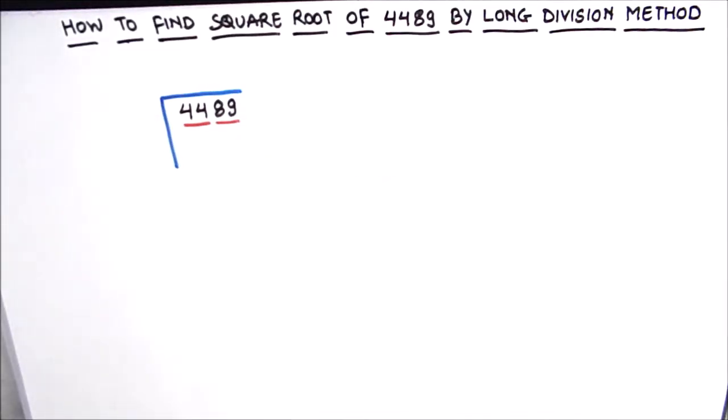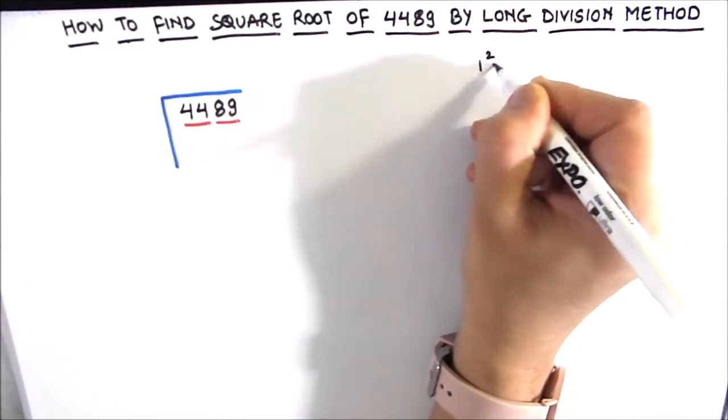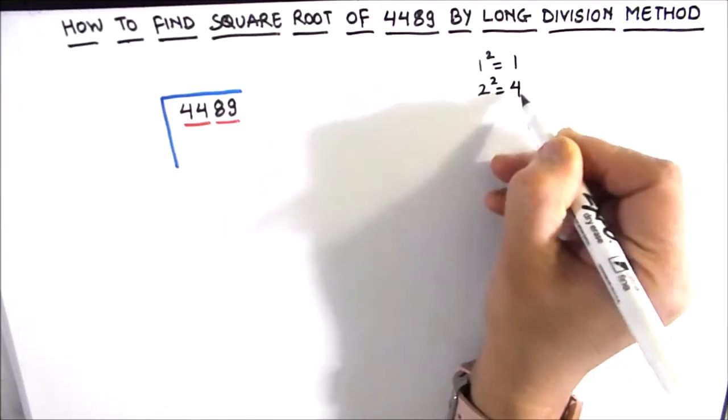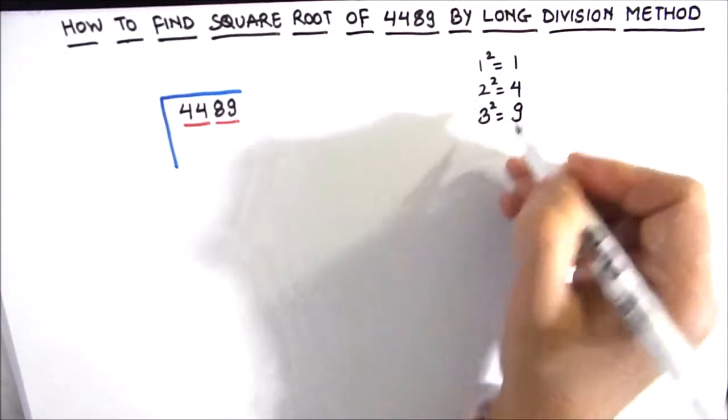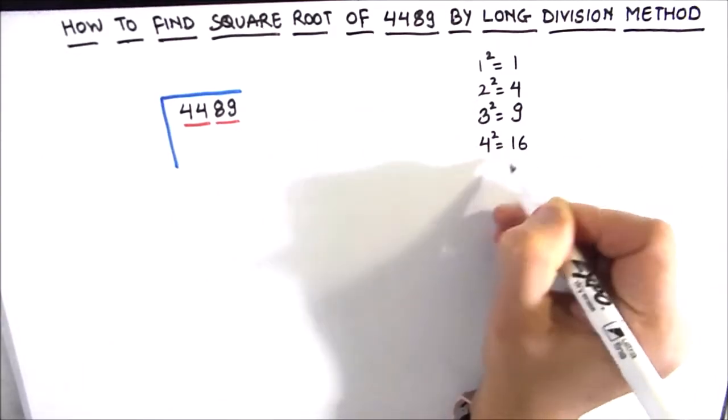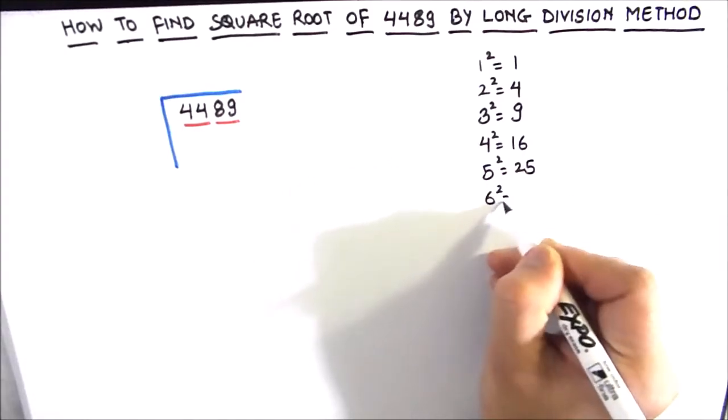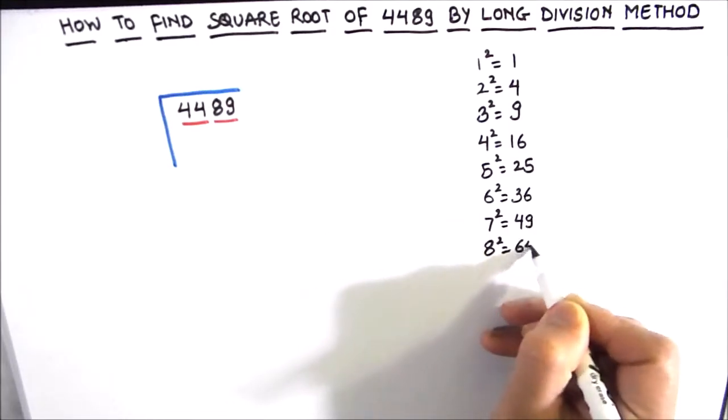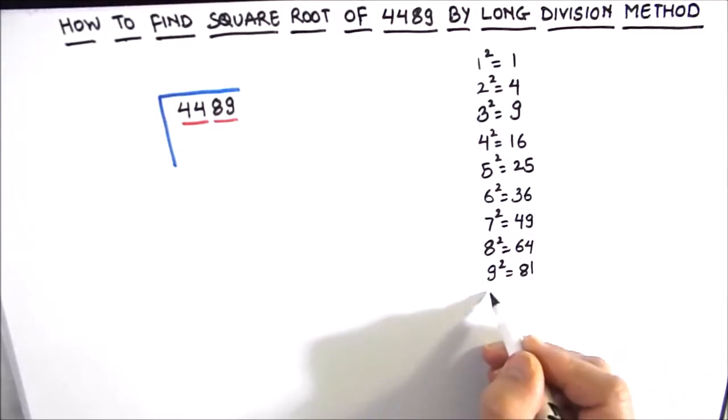The next step is completely optional. I am going to write the squares of the numbers here on the right hand side so that it is easy for us to find the square number when we are doing the long division. So 3 square is 9, 4 square is 16, 5 square is 25, 6 square is 36, 7 square is 49, 8 square is 64, 9 square is 81, and 10 square is 100.